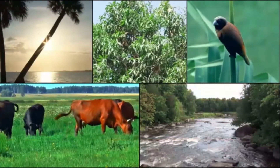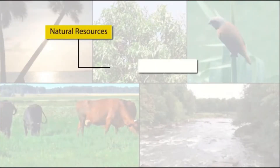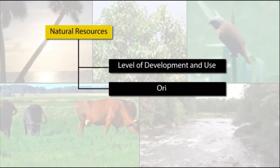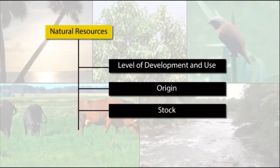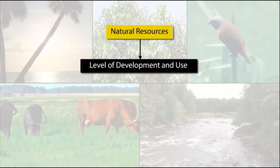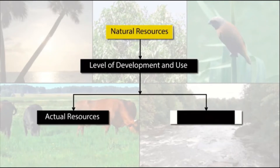Natural resources can further be categorized into groups. These groups are based on their level of development and use, origin, stock and distribution. Depending on their level of development and use, natural resources can be classified into two groups: actual resources and potential resources.